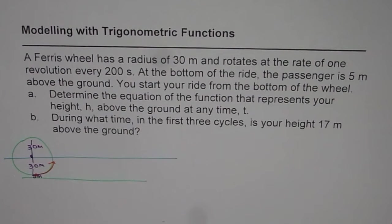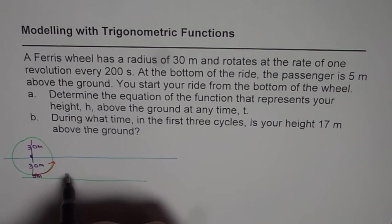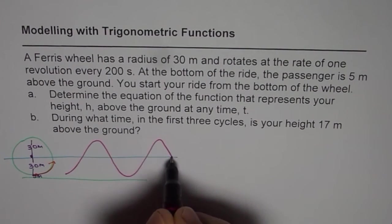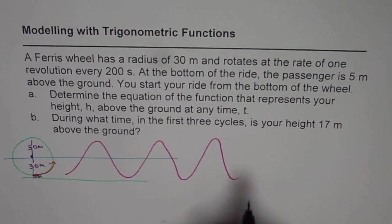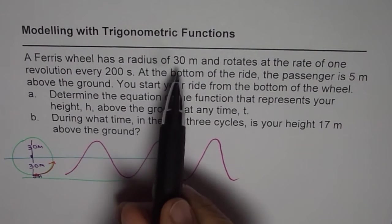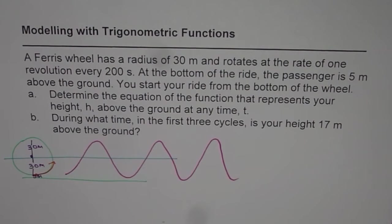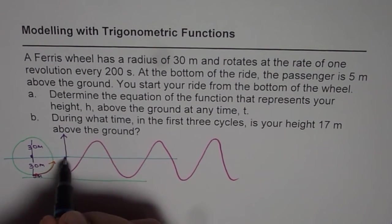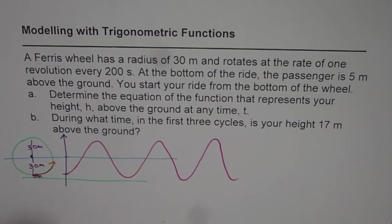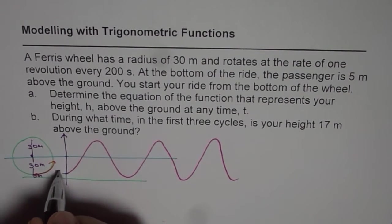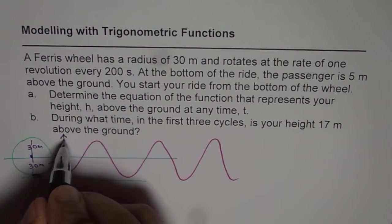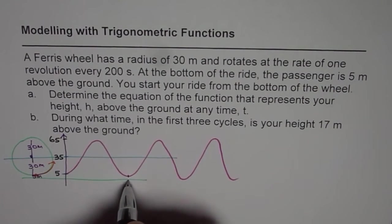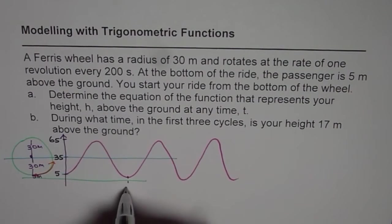Let us assume it starts from the bottom, which is 5 meters above the ground, so the ride graph will look like this. I am drawing three cycles here. It is given that the radius is 30 meters — that is to say, from the axis it will be 30 meters above and 30 meters below. The minimum is 5 meters, so 5 plus 30 gives us 35, and adding another 30 gives us 65 as the maximum. The time period is 200 seconds, so the center will be at around 100 seconds.